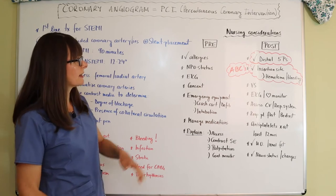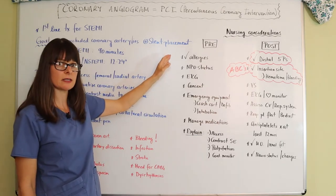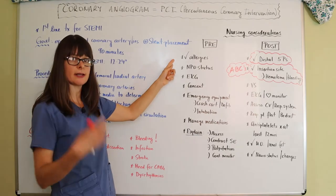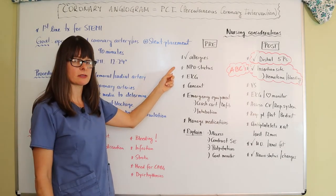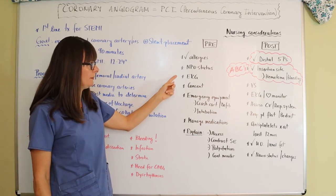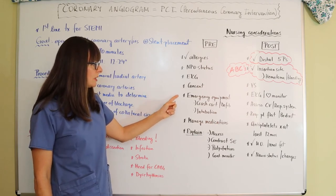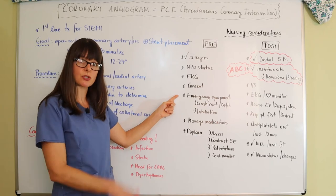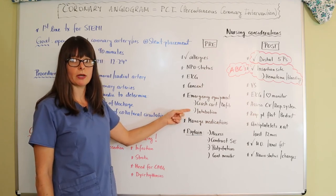For pre-procedure nursing considerations, we must check the patient for allergies — particularly contrast dye allergies. We need to ensure the patient is NPO, though emergencies are always an exception. Check the EKG, verify consent — noting we are witnesses to signing. We also want emergency equipment ready: the crash cart, defibrillator, and intubation equipment, because complications can occur when we manipulate the patient's heart.